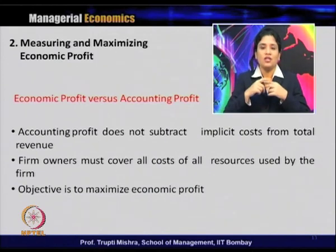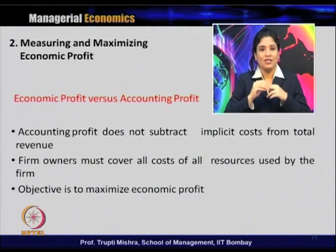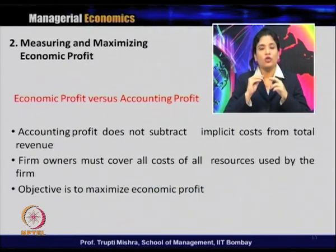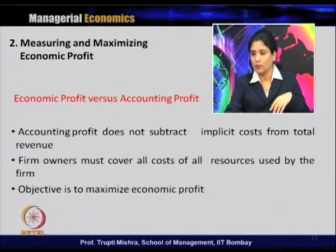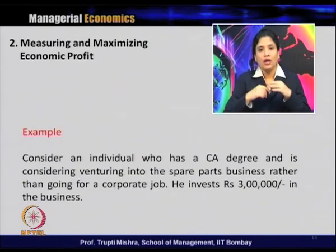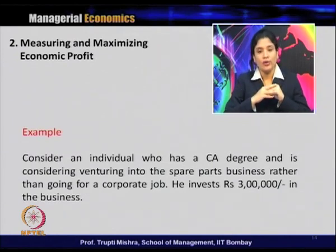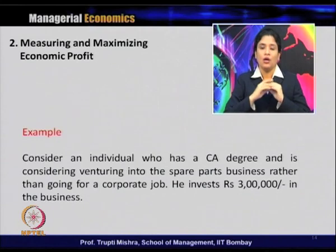The objective of the firm is to maximize economic profit, and for that, all costs associated with all resources used by the firm must be covered. Let us consider an example to clarify what counts as implicit cost, explicit cost, accounting profit, and economic profit.